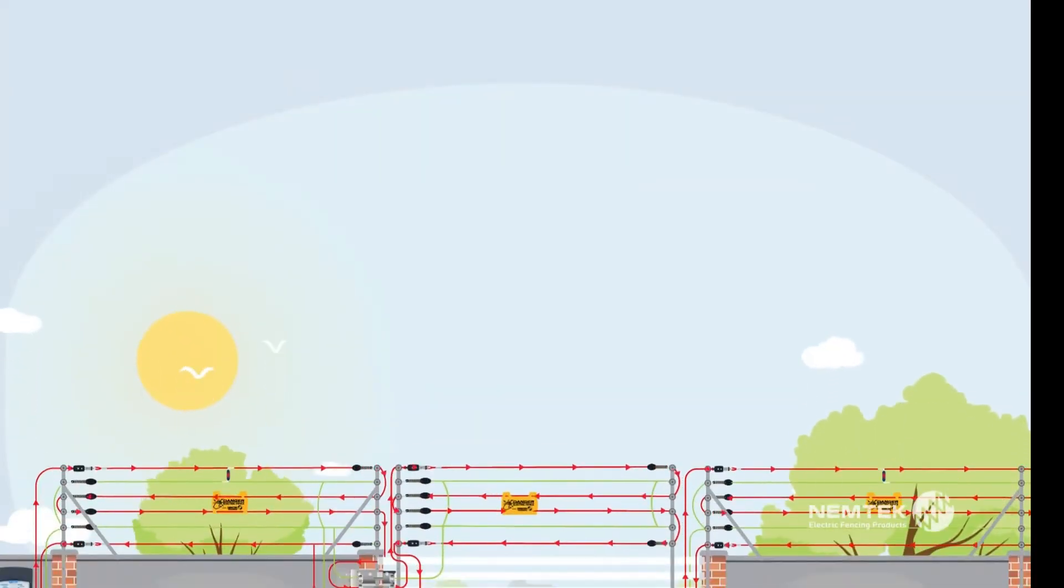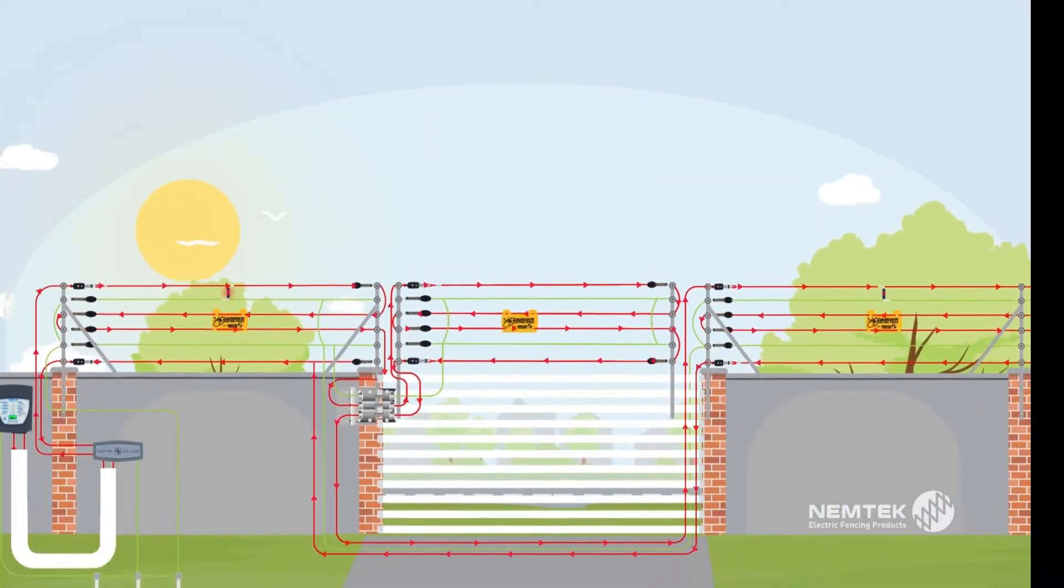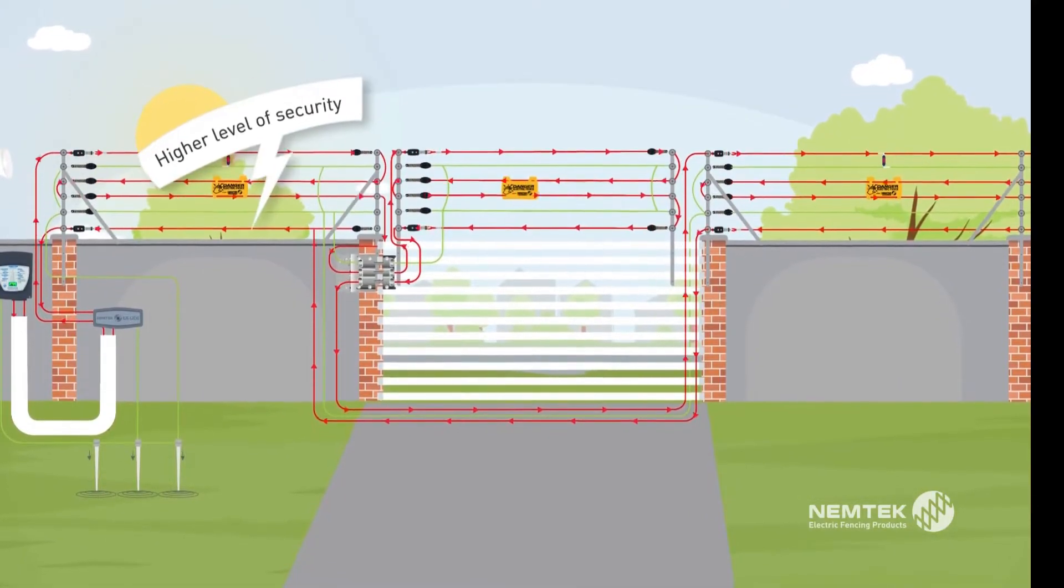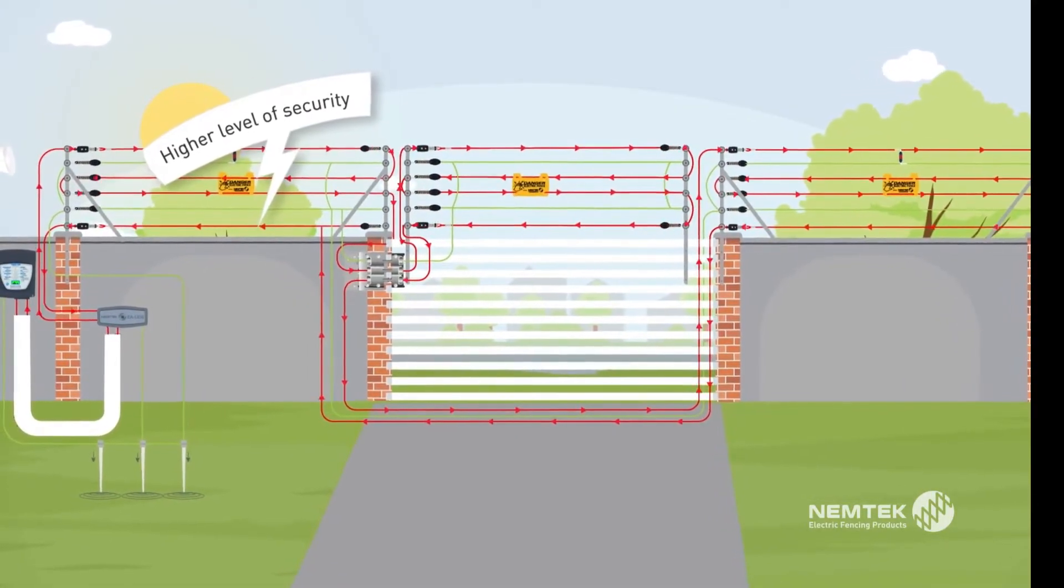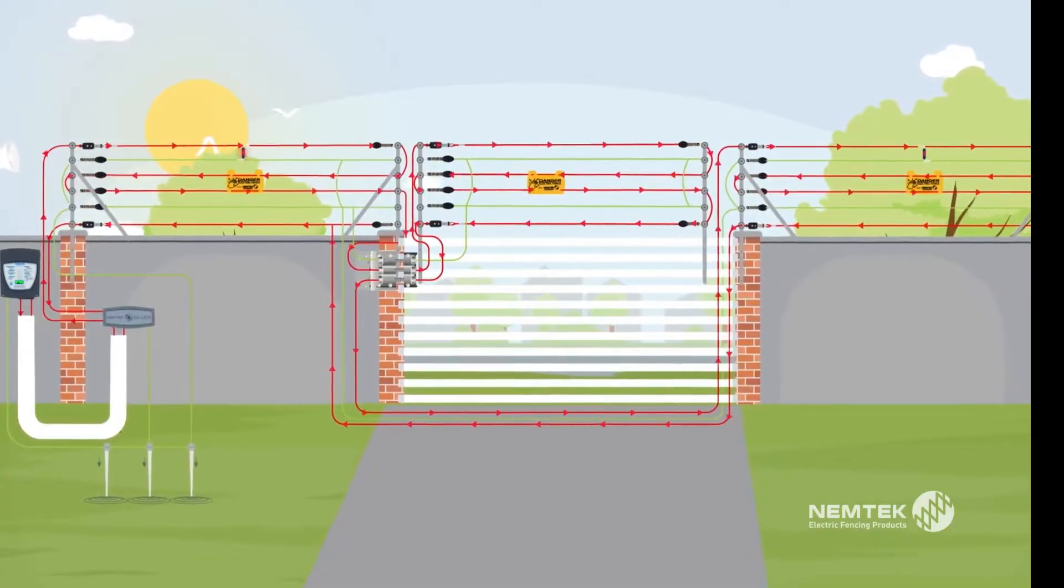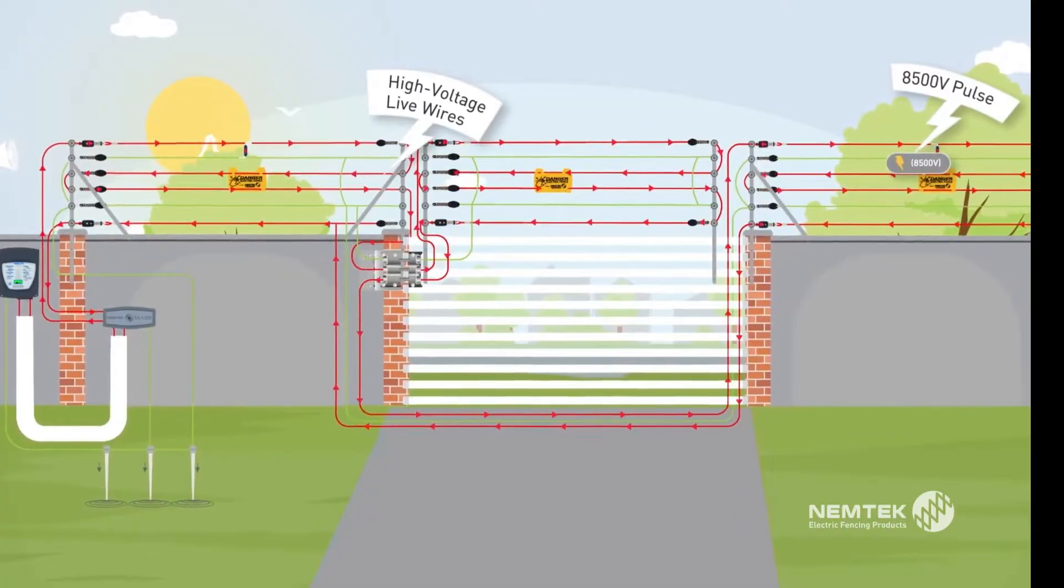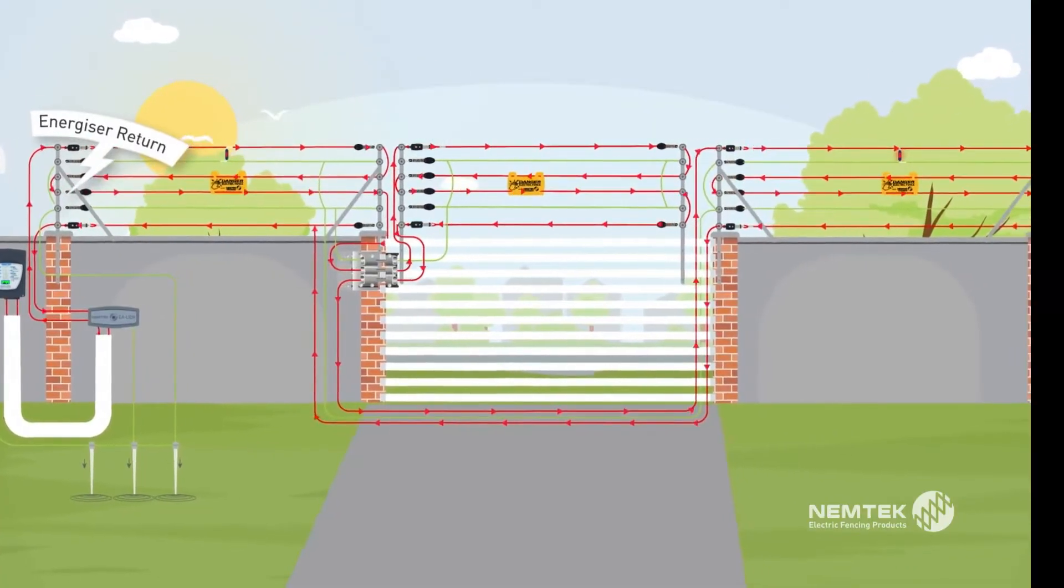A Nemtek electric fence wired in series will detect a cut or short in the fence, thereby enhancing your levels of security. A high voltage pulse is generated by the energizer, typically every second, travels through the live wires in a series loop and then returns to the energizer.